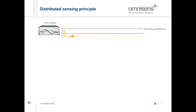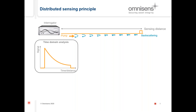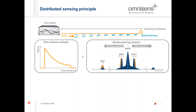Now I'll move to the distributed sensing principle. It all begins with an interrogator sending a pulse of light down the fiber. As the pulse propagates, a little bit of backscattering goes back toward the interrogator where it is measured and analyzed. The first thing we do is a time domain analysis — knowing the speed of light in the fiber and having a good stopwatch, we can measure as a function of time when the backscattering arrives. This gives us the position where it was emitted: the distance scale of the interrogator, basically the OTDR part, which also gives the accuracy of event localization.